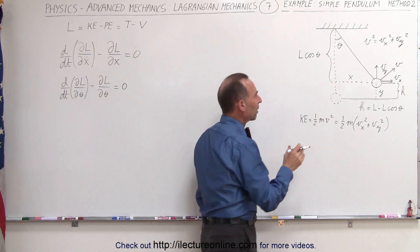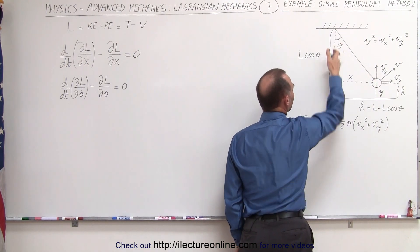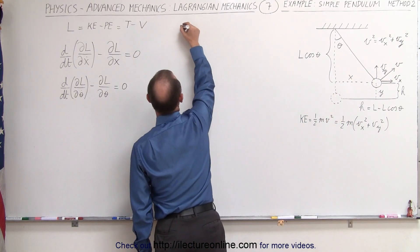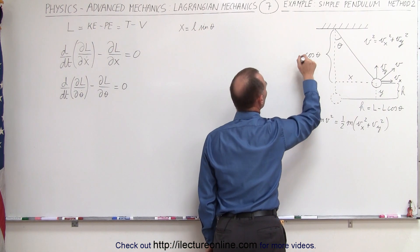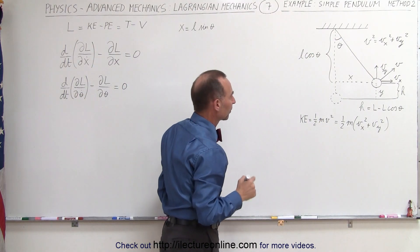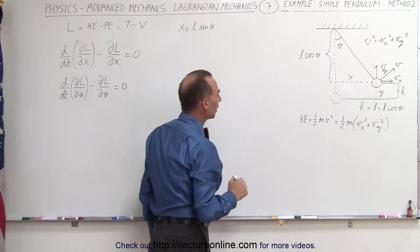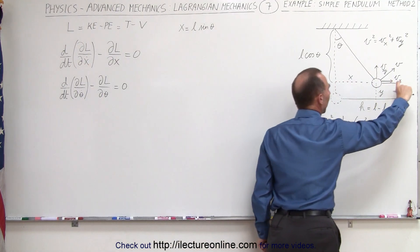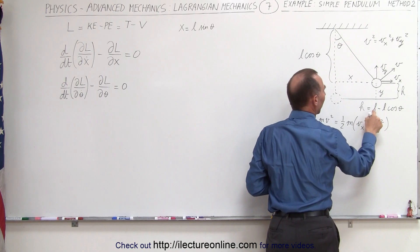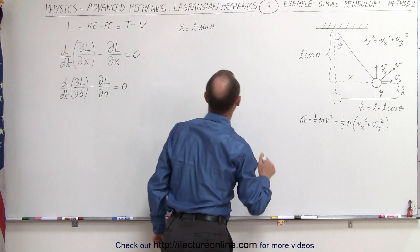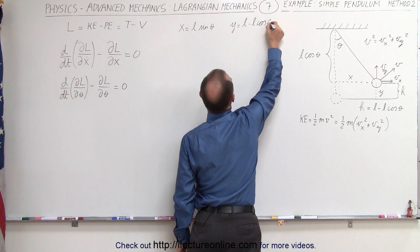Now we can also express the position of the pendulum in terms of x and y. The x position would simply be the length of the pendulum times the sine of the angle theta, so x equals l times sine of theta — using small l so we don't confuse it with the L of the Lagrangian. The position in the y-direction equals the height, which is l minus l times the cosine of theta, so y equals l minus l times the cosine of theta.